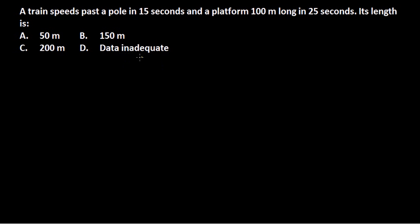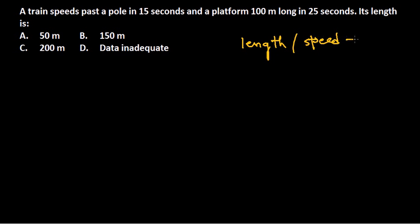Let's solve this problem — it's a little bit trickier and many students find it confusing. A train speeds past a pole in 15 seconds and a platform of 100 meters long in 25 seconds. What is the length of the train? The problem here is that in most train-distance problems, they tell you either the length of the train or the speed of the train, but in this case neither is disclosed.